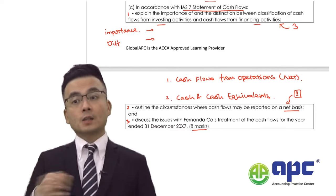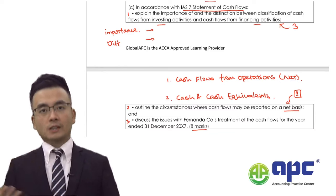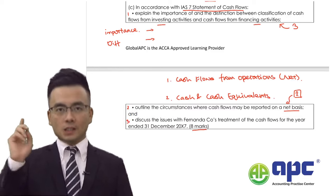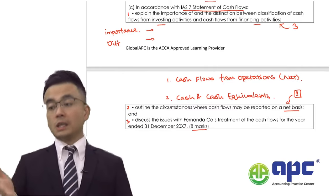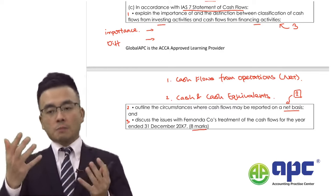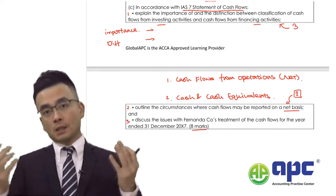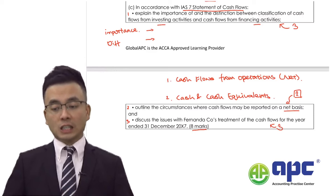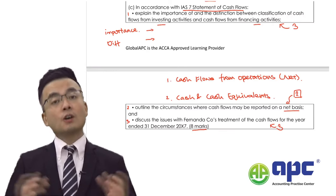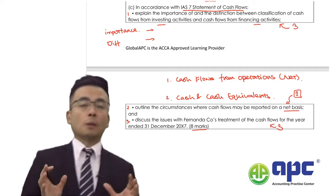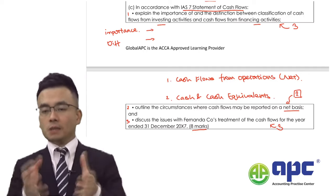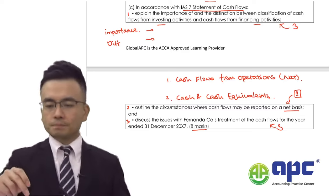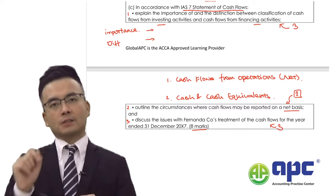I must say I'm not so clever in this particular requirement. You can allocate two marks there — three marks for the first part, two marks for the second part. The remaining three marks go to the application, because we are required to discuss the issues with the company's treatment of cash flows for the year-ended, and comment on whether the exam scenario has treated the case correctly. Don't be put off if you see such requirements in the actual exam.